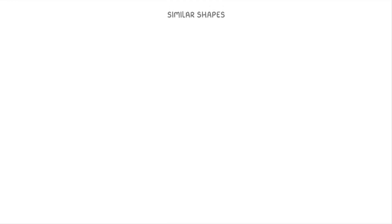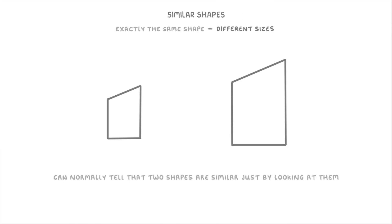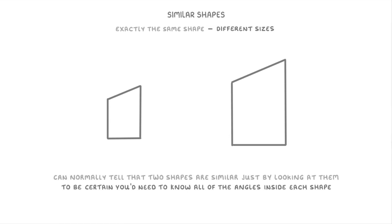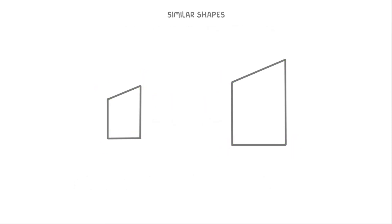In this video we're looking at similar shapes, which are shapes like these two that have exactly the same shape but are just different sizes. You can normally tell that two shapes are similar just by looking at them and seeing if they're the same shape, but to be certain you'll need to know all of the angles inside each shape. If we fill in all of these angles, you can see that both shapes have exactly the same angles, and this tells us for certain that these two shapes are similar.